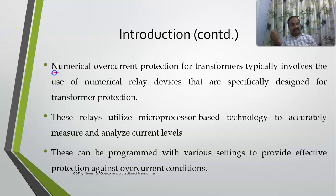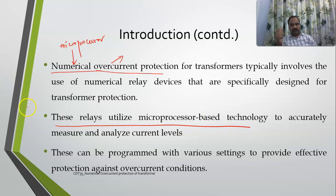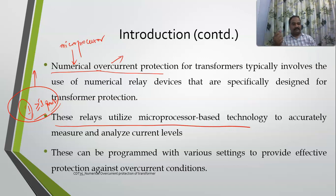Numerical overcurrent protection protects against overcurrents and is built on microprocessor-based technology. These relays utilize microprocessor-based technology to measure and analyze current levels. The measured current is analyzed against a preset value, and based on that an indication is given. These relays can be programmed with various settings so that they can be used effectively against overcurrents.